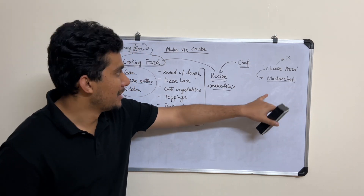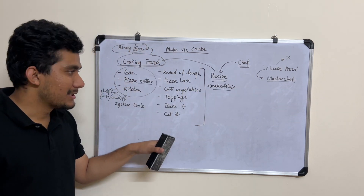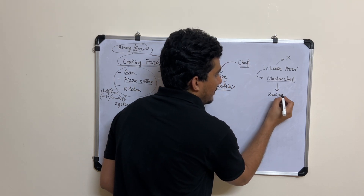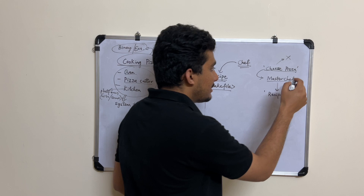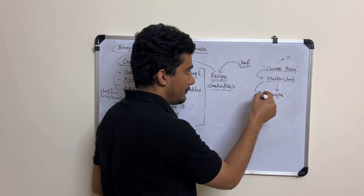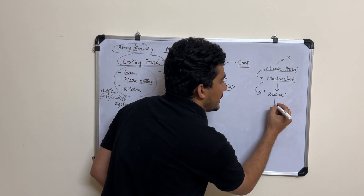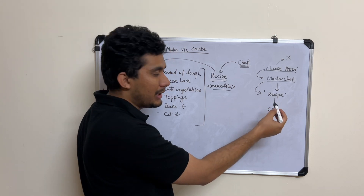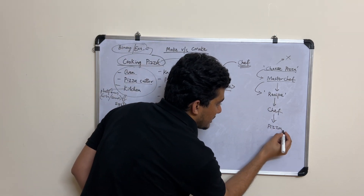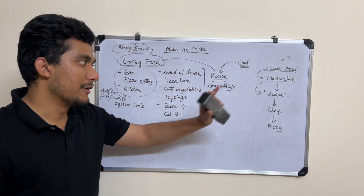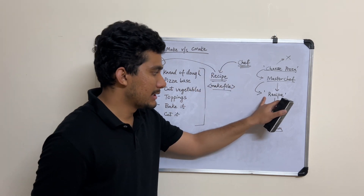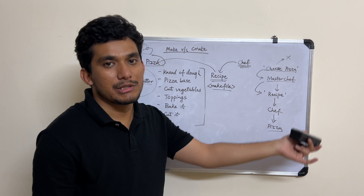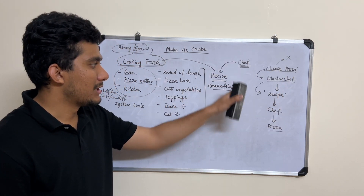The master chef is very busy and won't actually go and make it himself. But he will be able to give you a recipe for the cheese pizza. This recipe is then given to the chef — our chef — who will read the recipe and cook the pizza. So the master chef gives the recipe, the chef reads it and gets the pizza done. This master chef is actually your CMake.